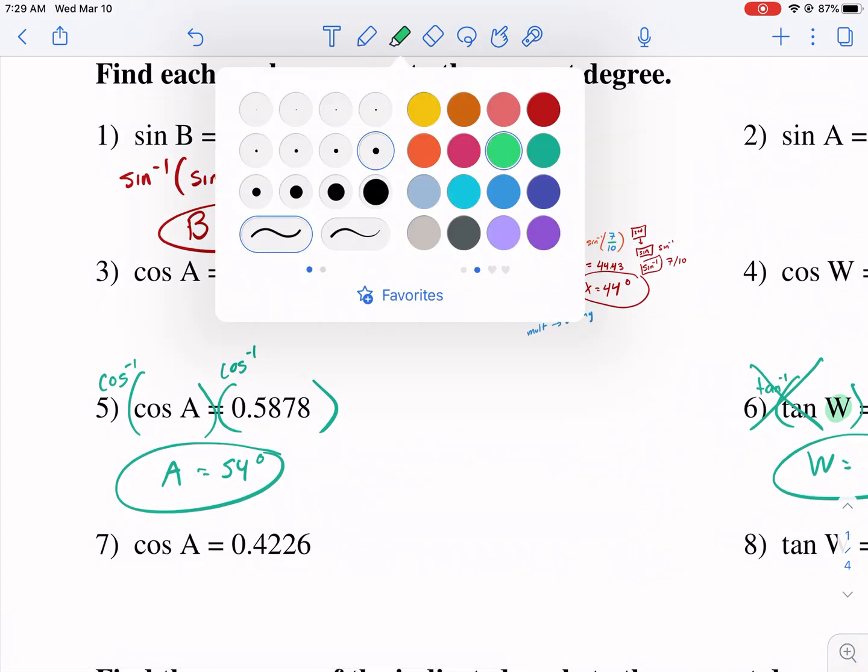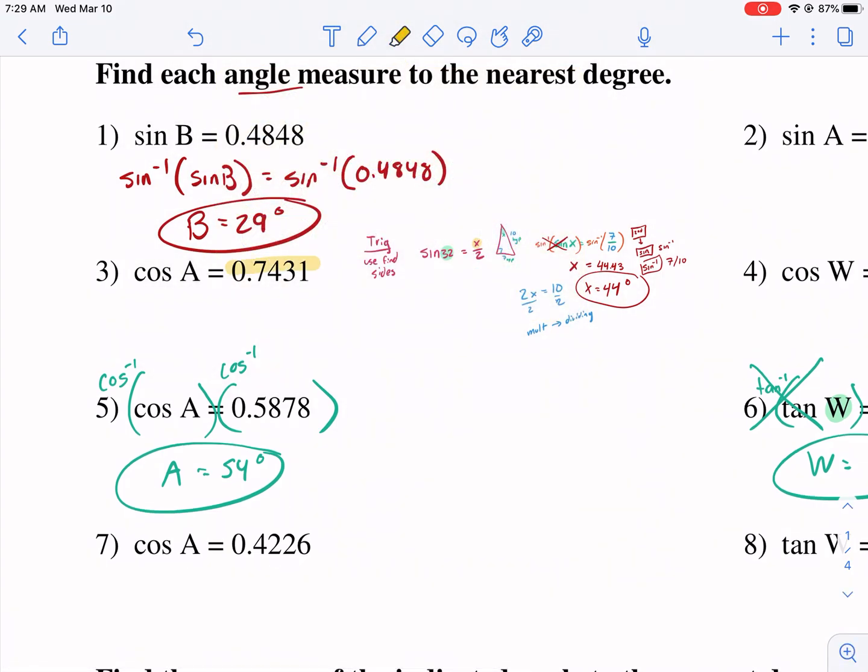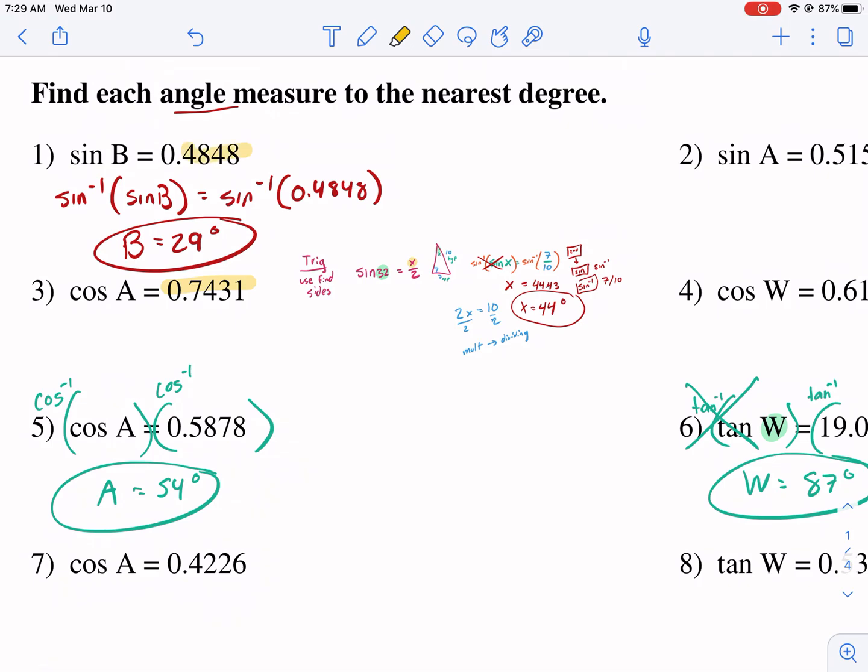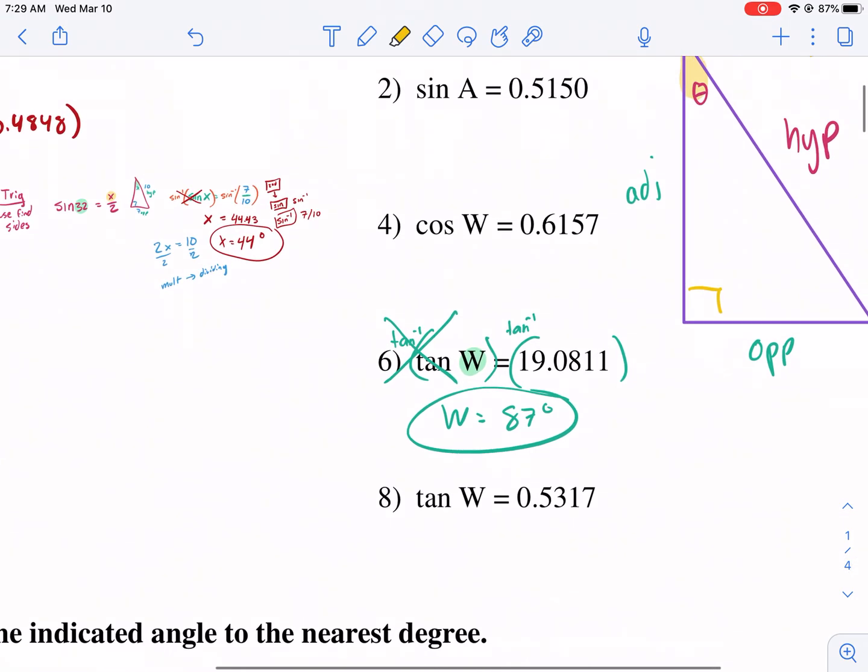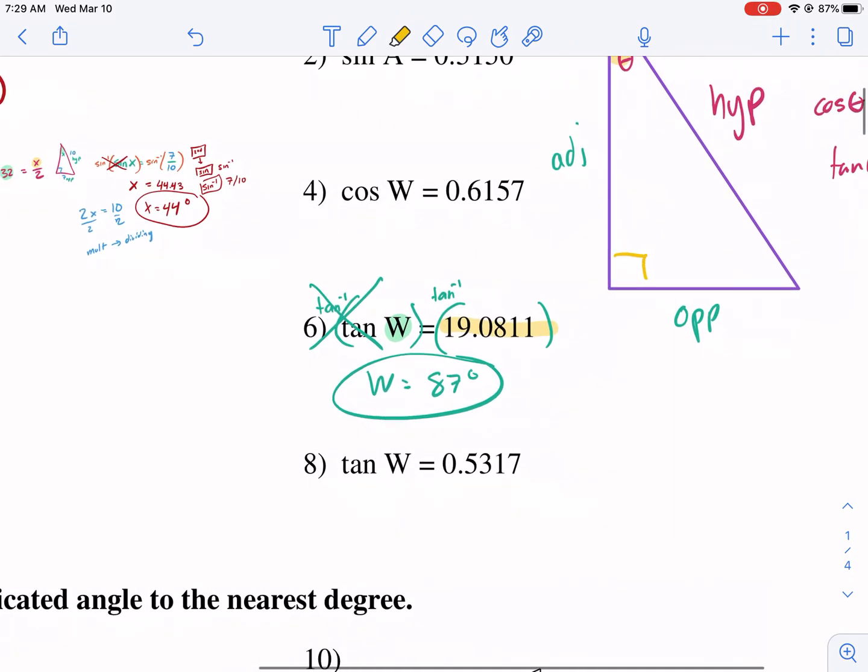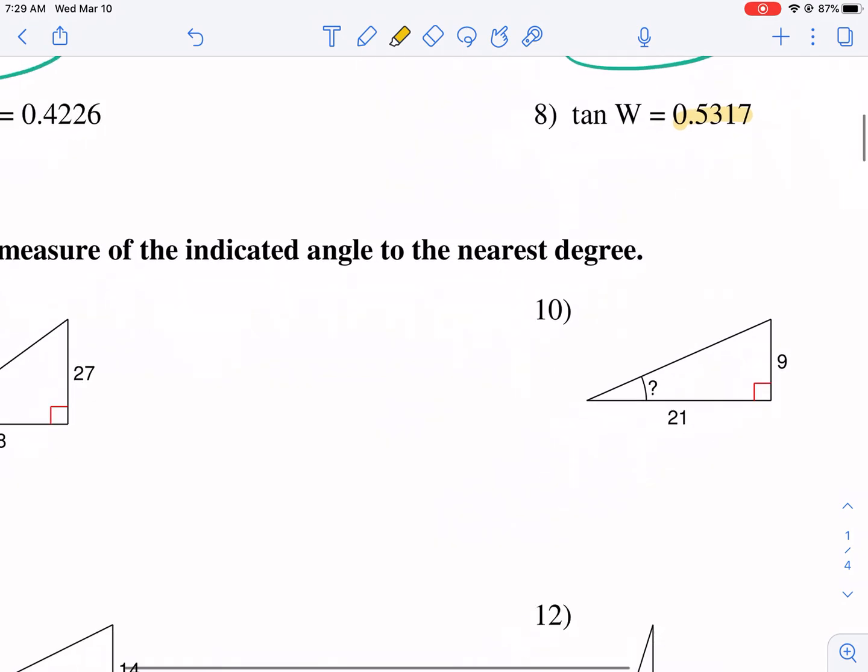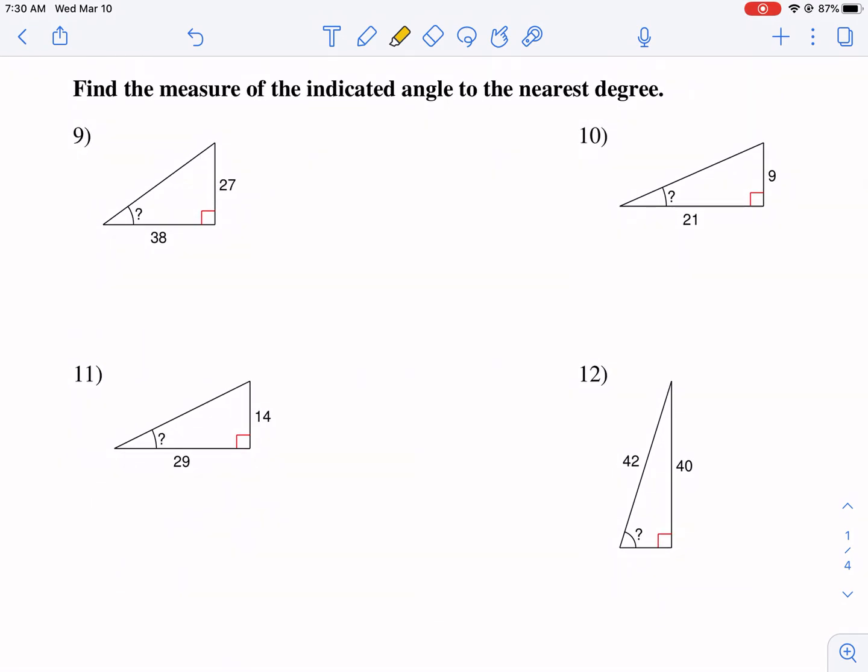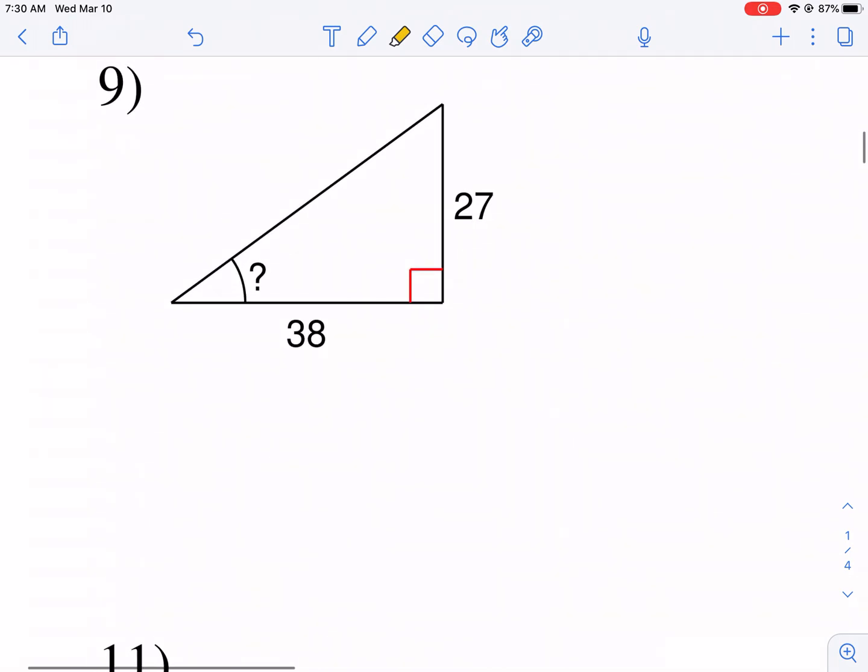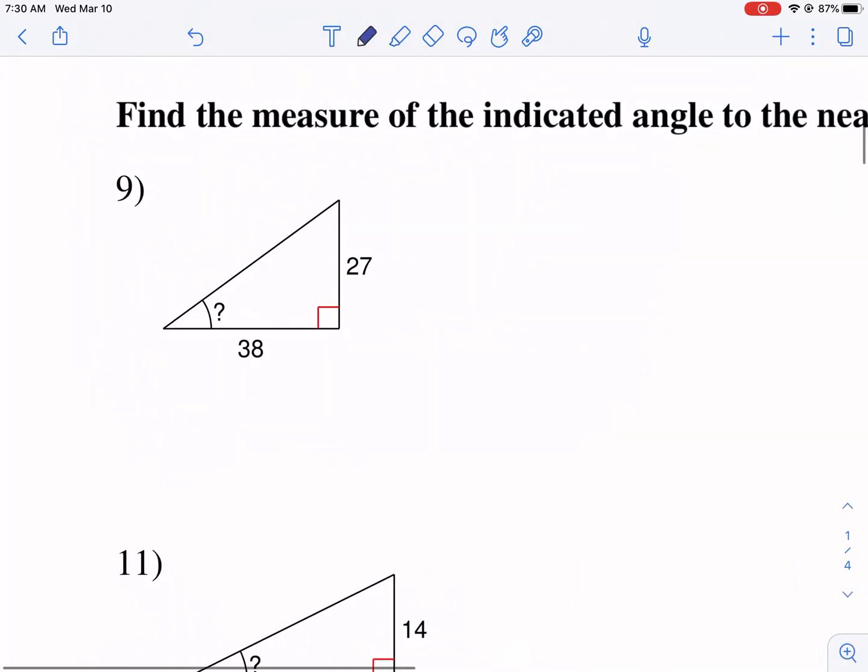Remember, these are all ratios. These are telling us how the sides compare to each other. This is the adjacent to the hypotenuse. The adjacent side is basically 74% of the length of the hypotenuse. This is telling us the opposite side is about 48% of the hypotenuse. This is saying our opposite side is 19 times bigger than our adjacent side. Let's go back to this. This is kind of what I led with. There's a multi-step process.